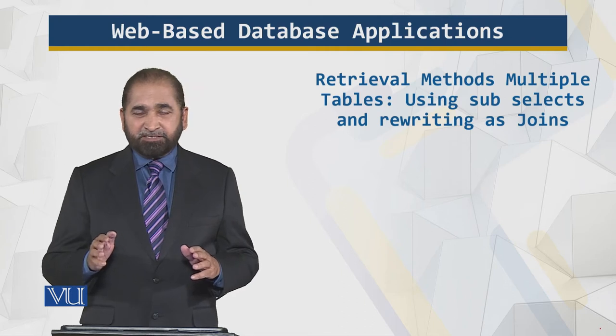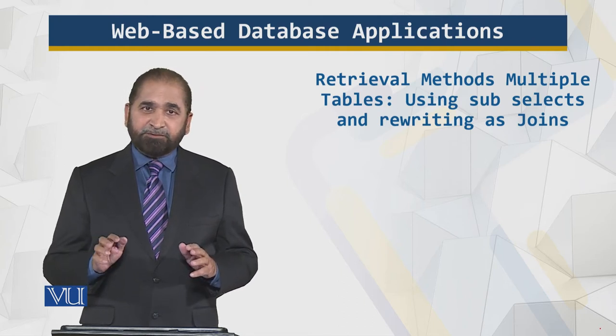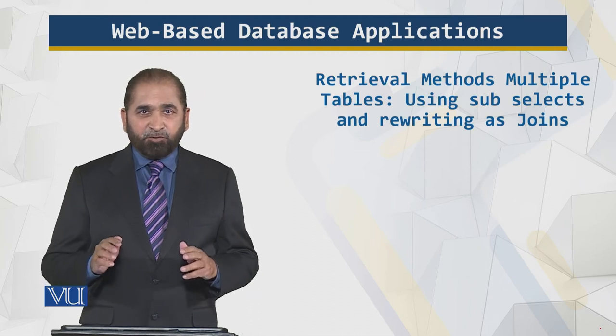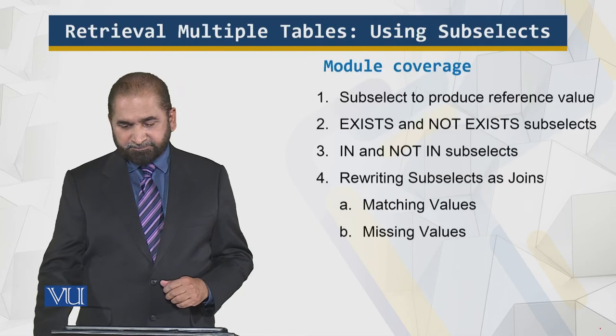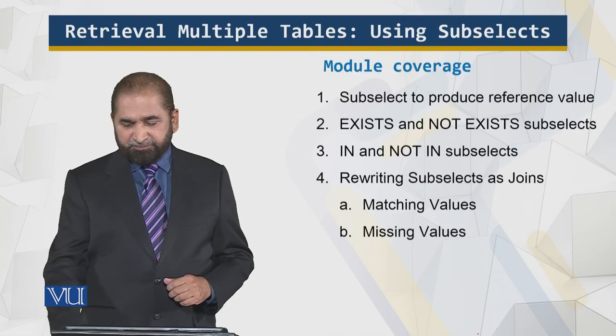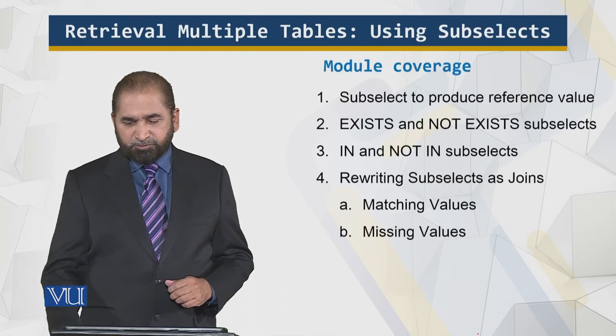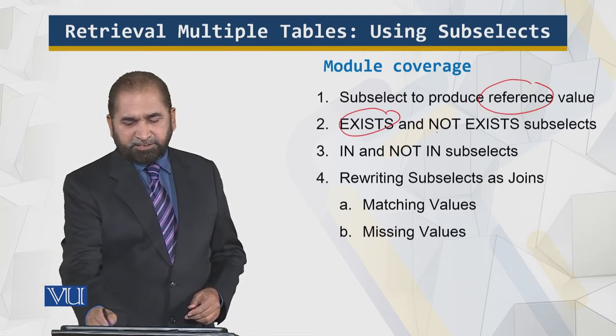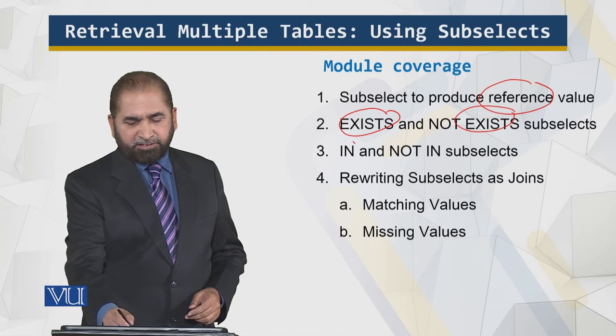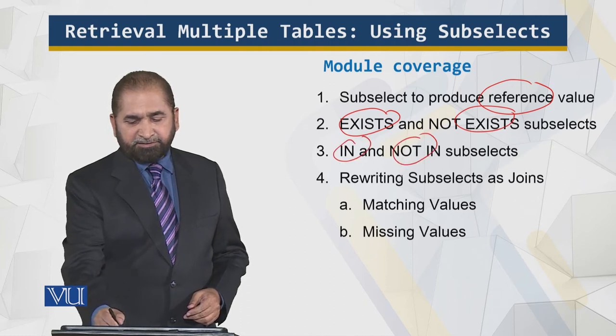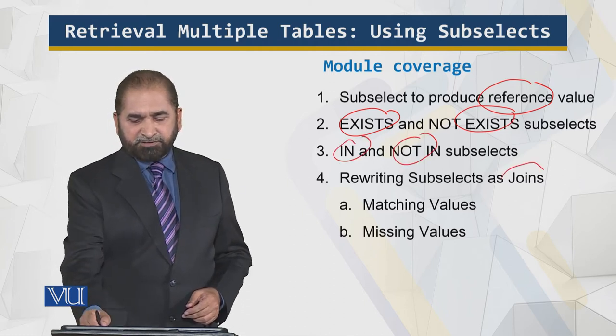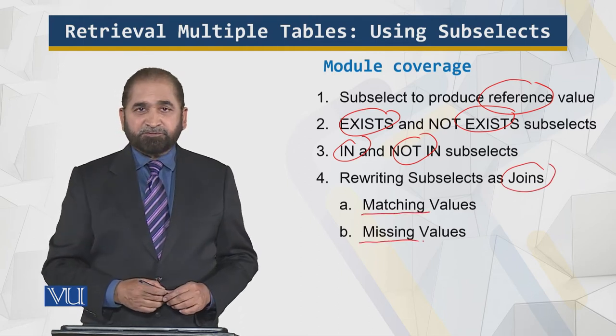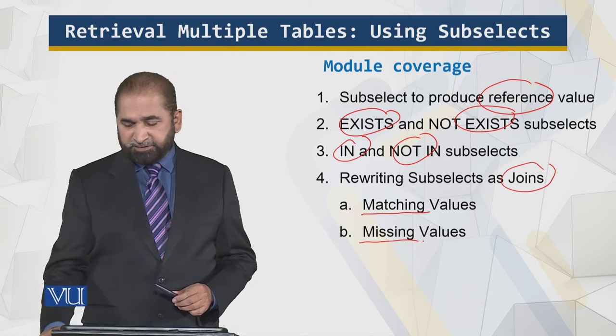I will show you the code and the results, but you have to run them yourself. Convince yourself. So let's look at the outline of this module. We have these subselects to produce the reference value, and we will talk about EXISTS and NOT EXISTS, IN and NOT IN, and rewriting as joins for matching values and for missing values.